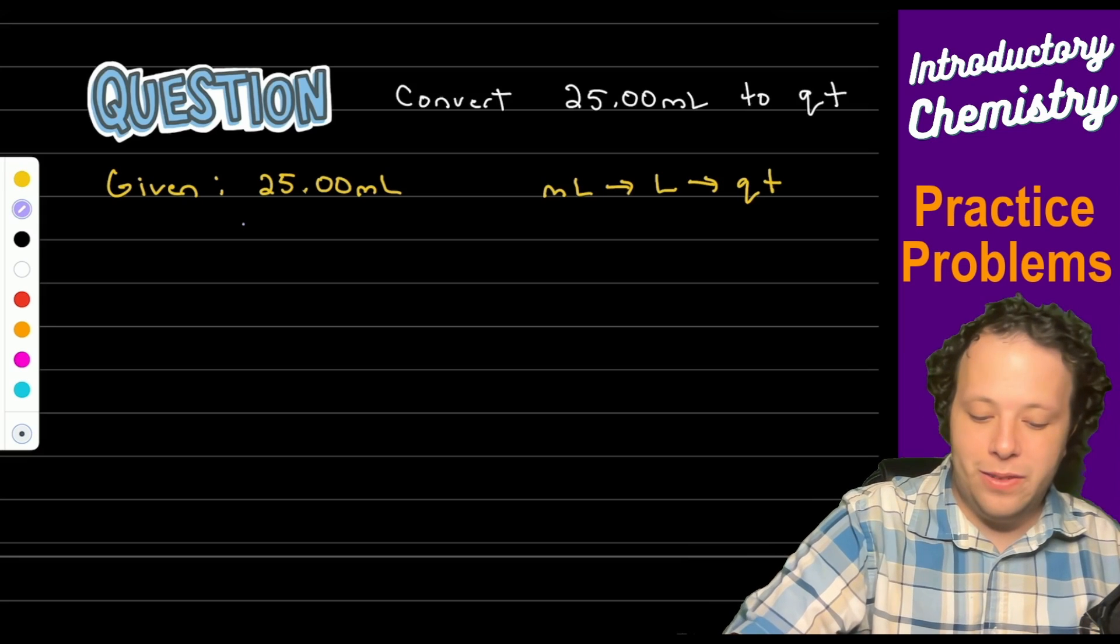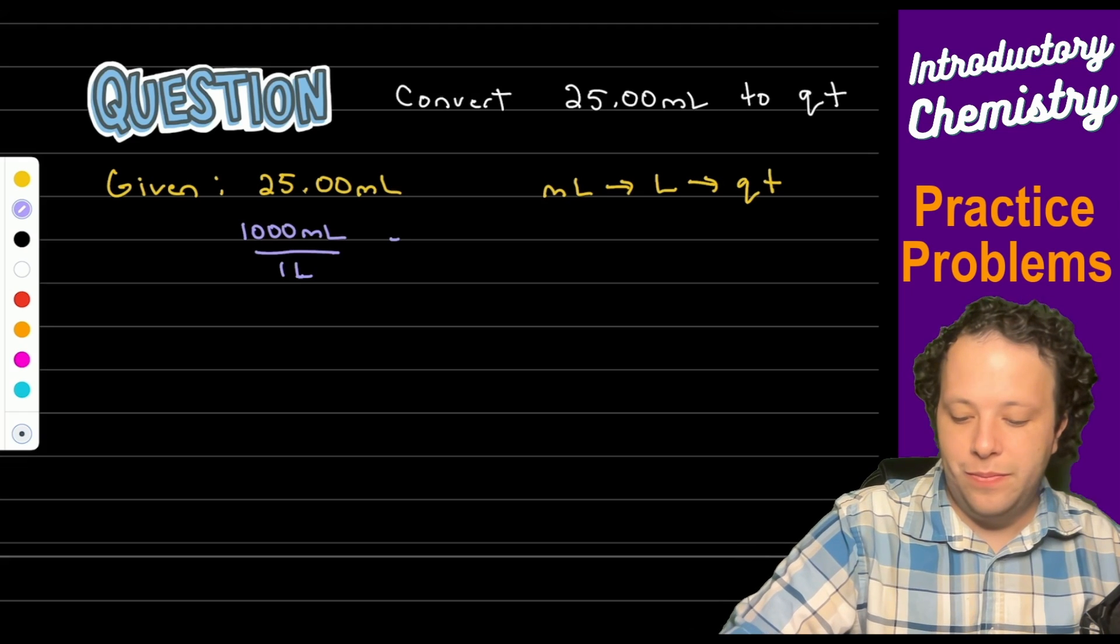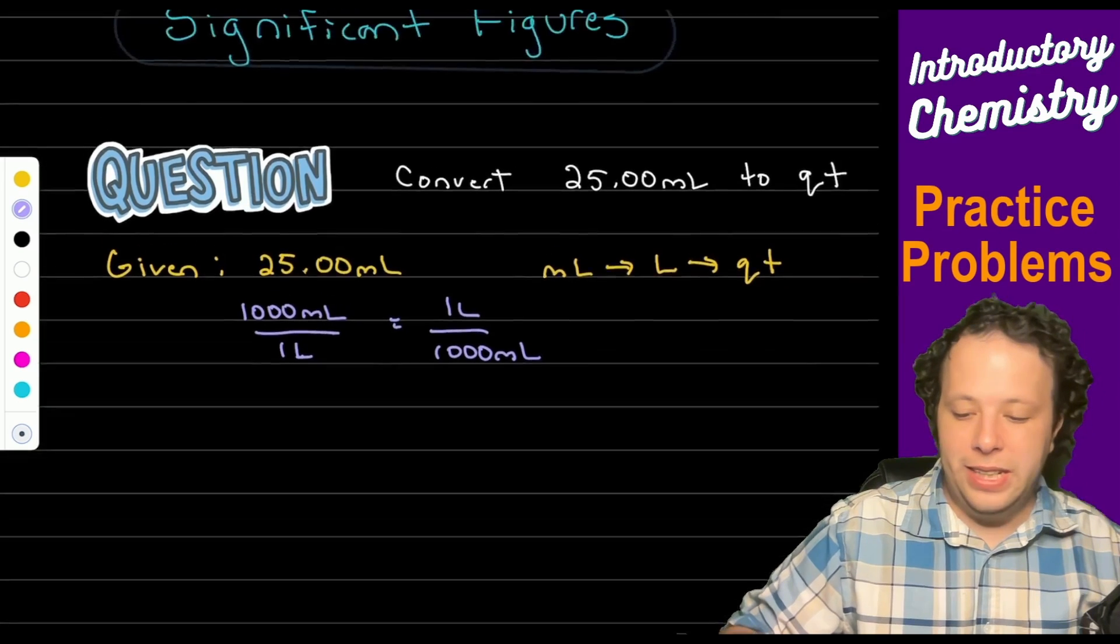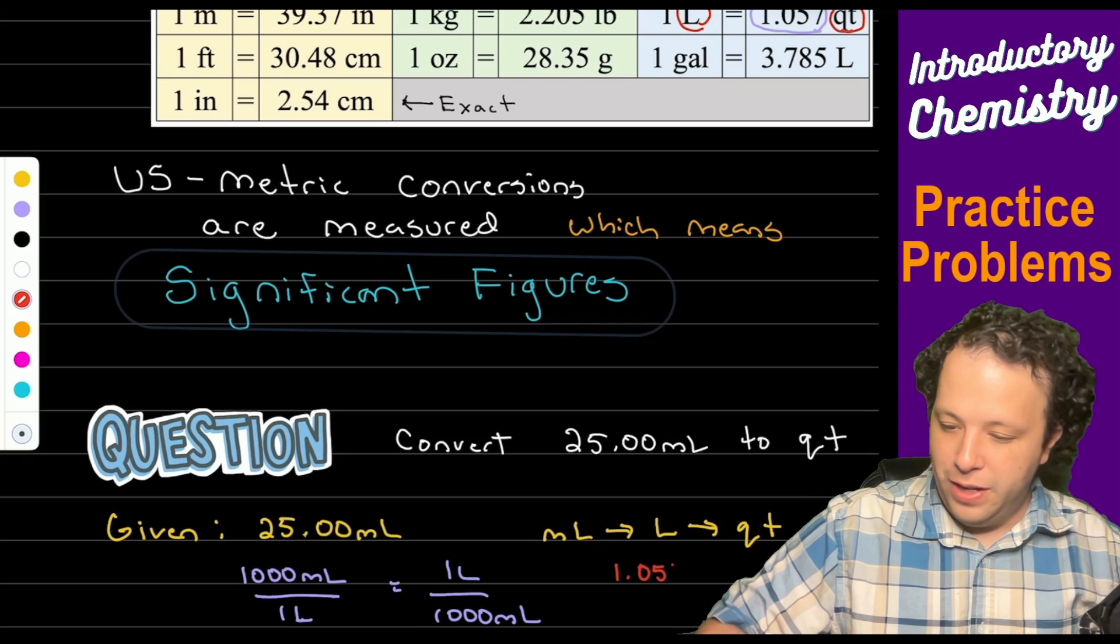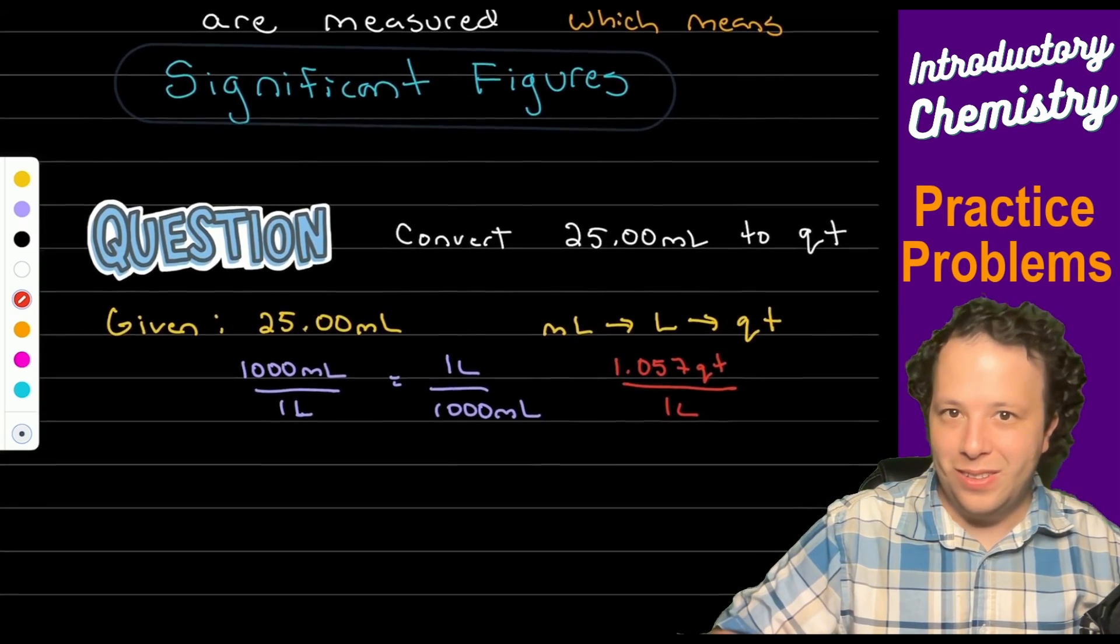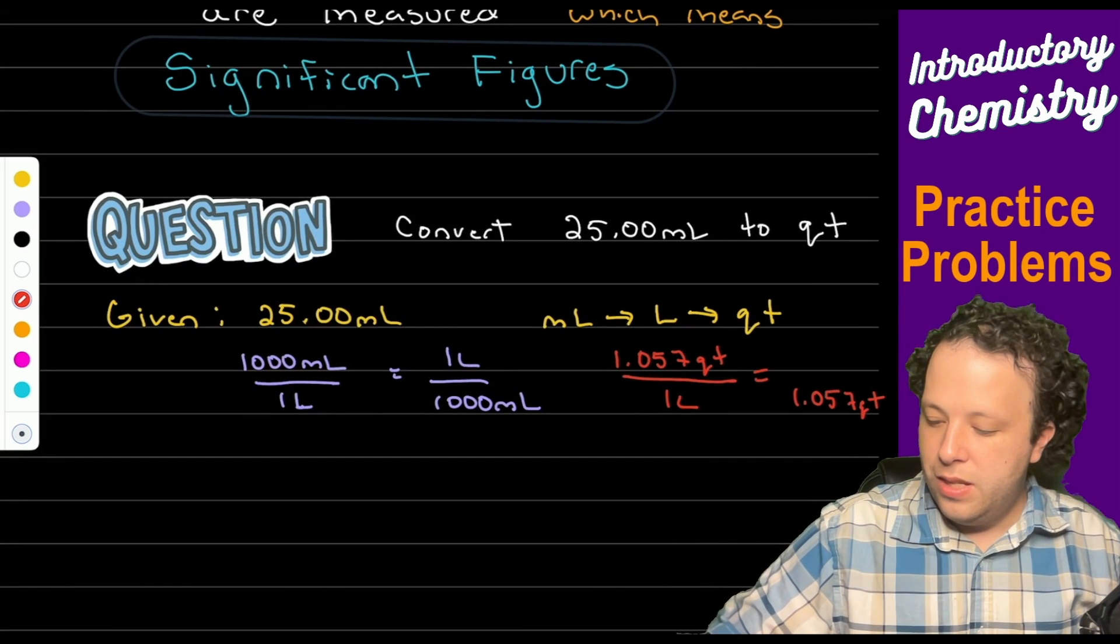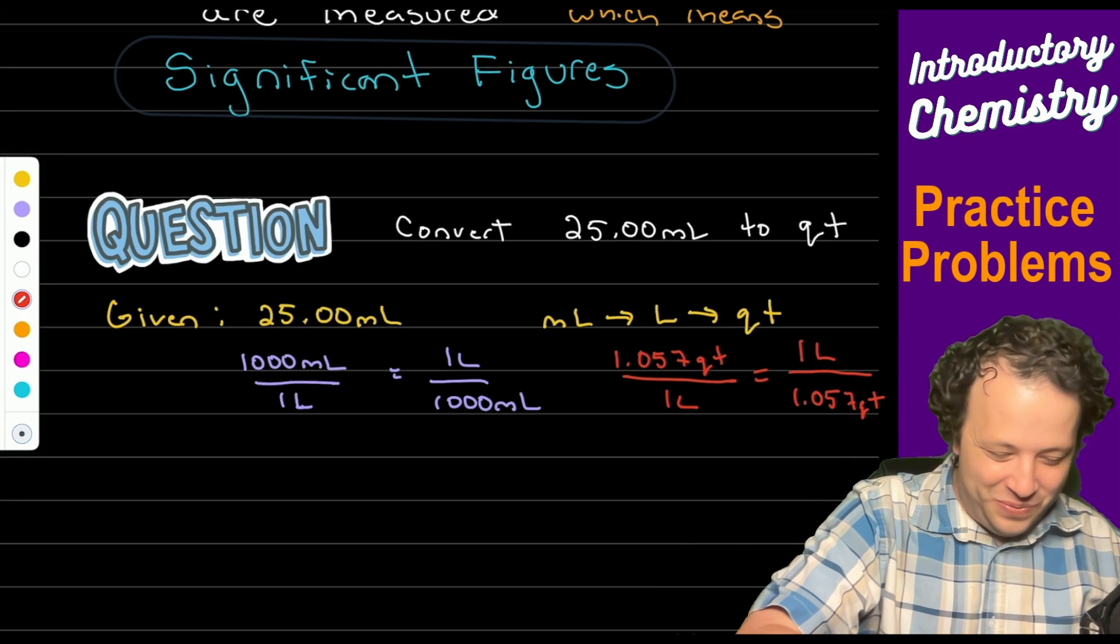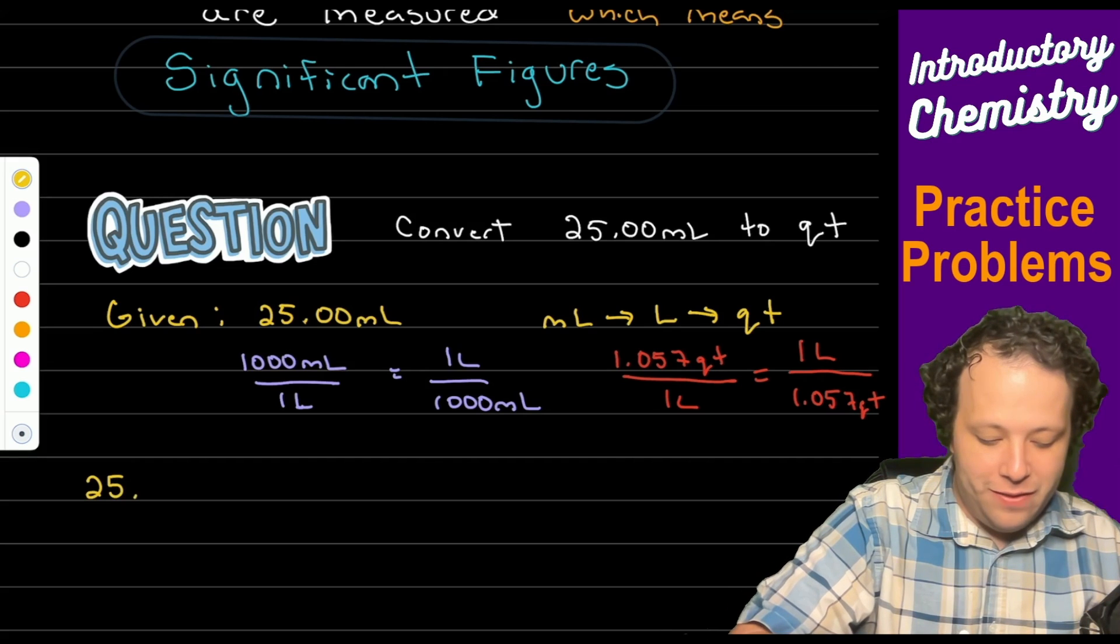We said before we had to go from milliliters to liters to quarts. So we also have 1,000 milliliters is one liter. And then we also have liters to quarts from our table above and that was 1.057 quarts is one liter. So when we do that we start with our given which is the 25 milliliters.